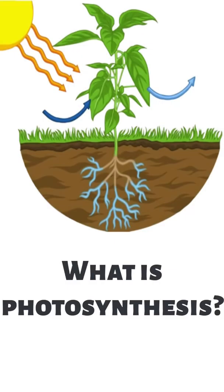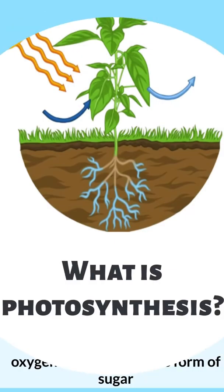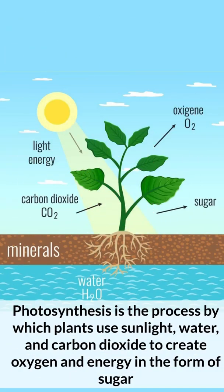What is photosynthesis? Photosynthesis is a process by which plants use sunlight, water, and carbon dioxide to create oxygen and energy in the form of sugar.